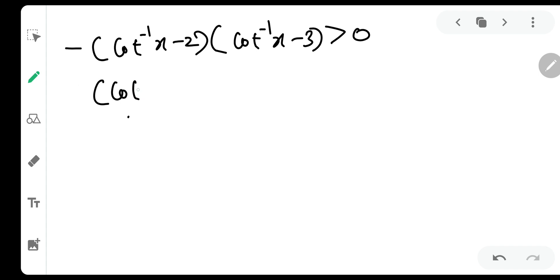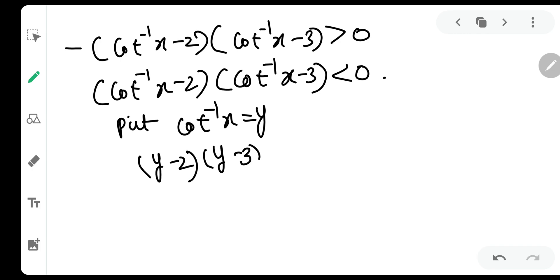Just multiply both sides by minus 1. We will get cot inverse x minus 2 and cot inverse x minus 3 less than 0. Let us put cot inverse x as y. So we have y minus 2 and y minus 3 is less than 0.